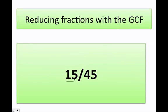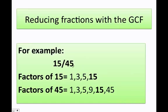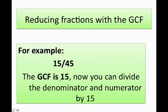What about 15 over 45? First, let's figure out the greatest common factor. The factors of 15 are 1, 3, 5, and 15. The factors of 45 are 1, 3, 5, 9, 15, and 45. The greatest common factor is 15. So I divide both sides by 15: 15 divided by 15 is 1, and 45 divided by 15 is 3.